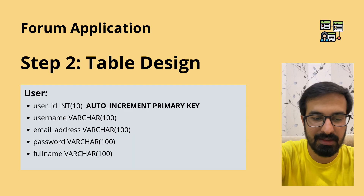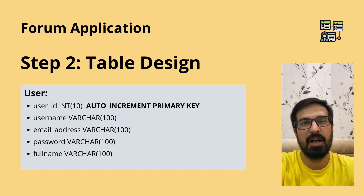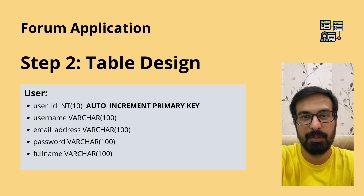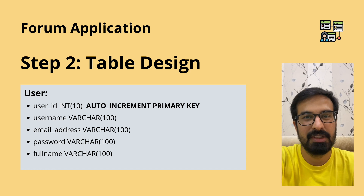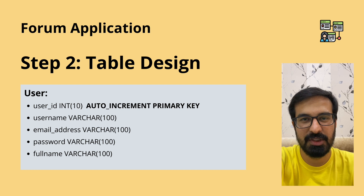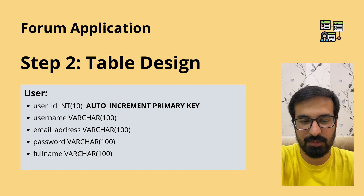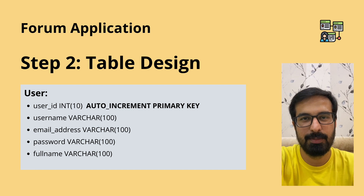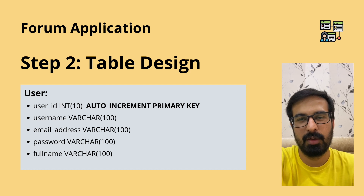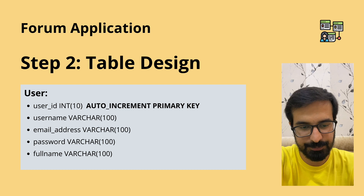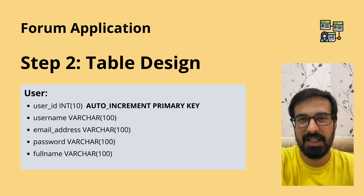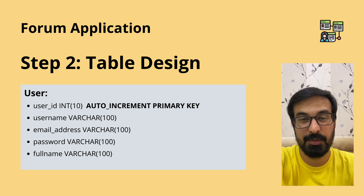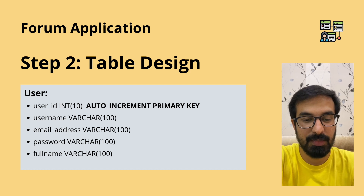Once we've identified the relationships, we move on to designing the tables. The user table will have a user ID as an auto-increment column which will also be the primary key — it just acts as a primary key with no significant information attached. Then comes username, email address, and password with VARCHAR (the size depends on your application requirements). Whenever you are developing an application with passwords, always hash your password — use a hashing technique.